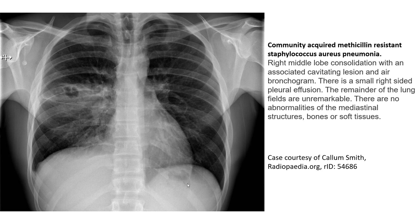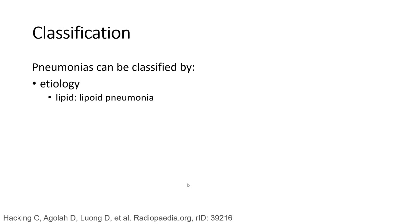This is an example of community-acquired pneumonia showing right middle and lower lobe consolidation with an associated cavitating lesion and air bronchogram, as well as a small right-sided pleural effusion. The remainder of the lung appears unremarkable. Sometimes pneumonia is caused by lipid accumulation in the lung, which we call lipoid pneumonia.